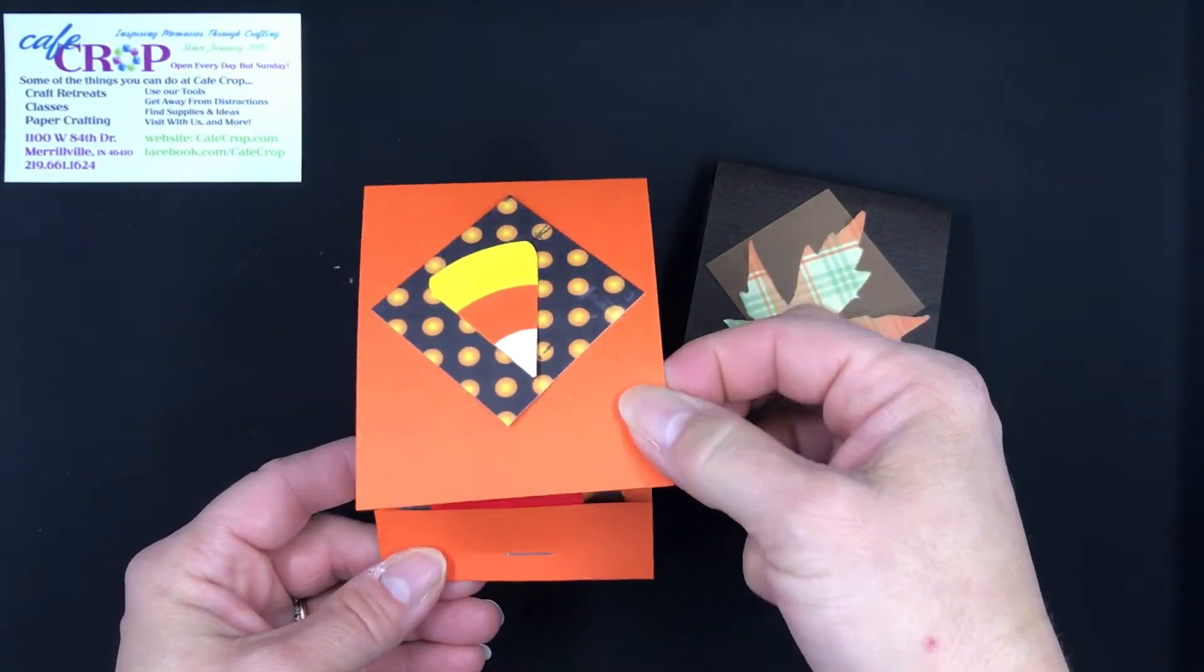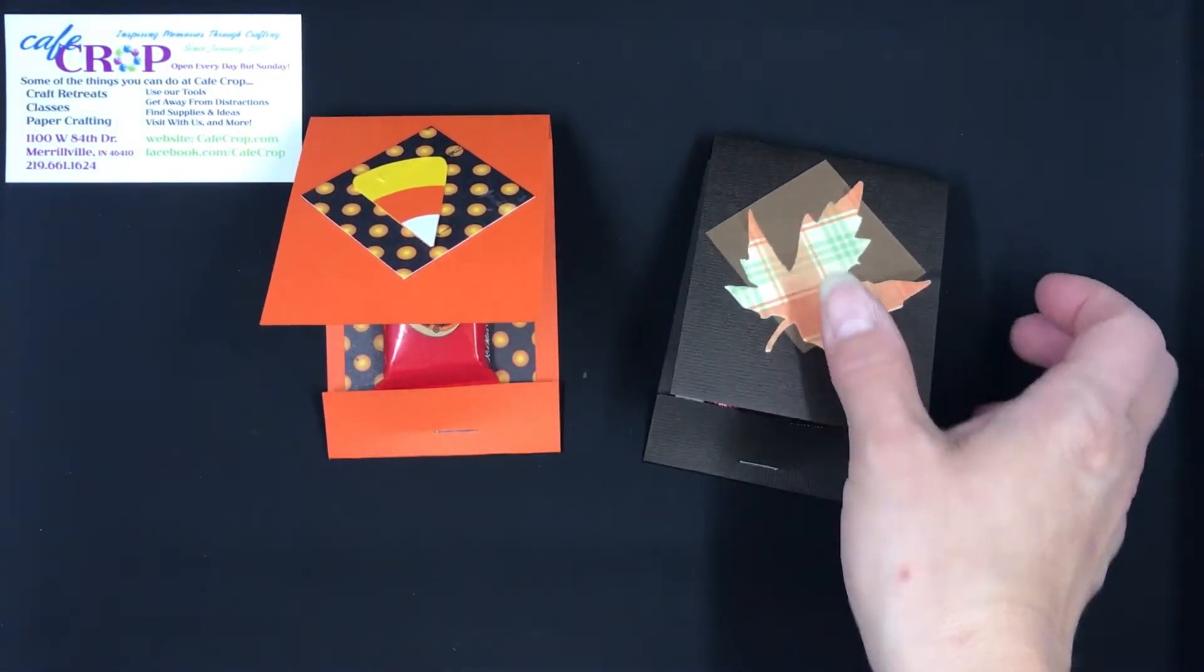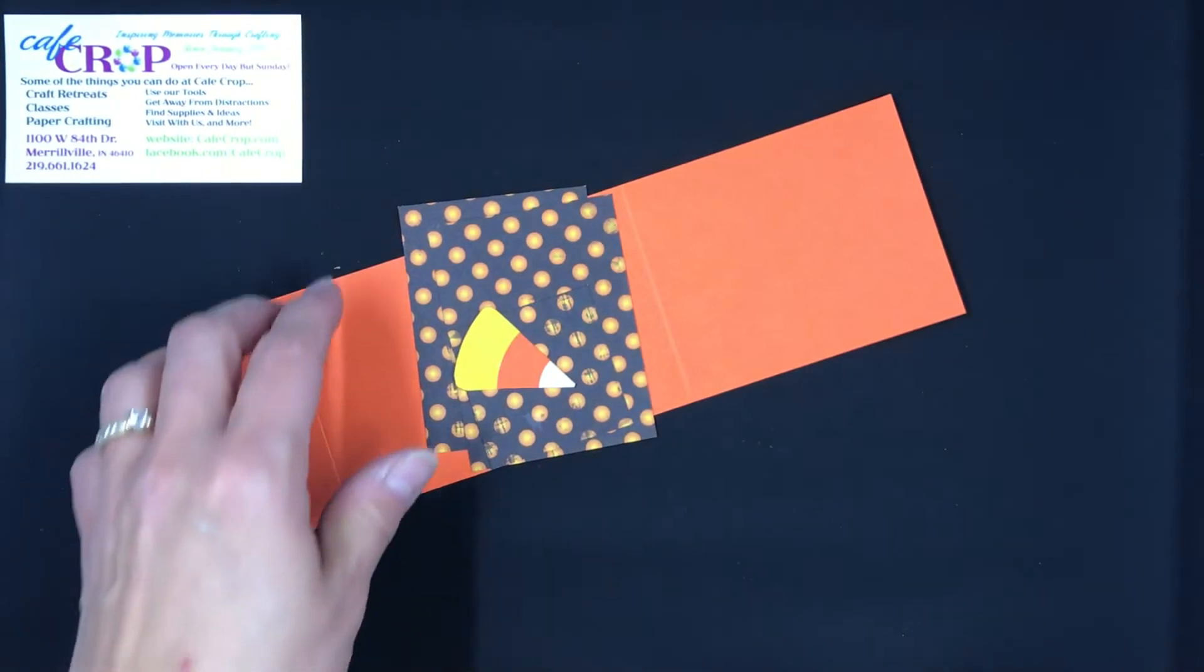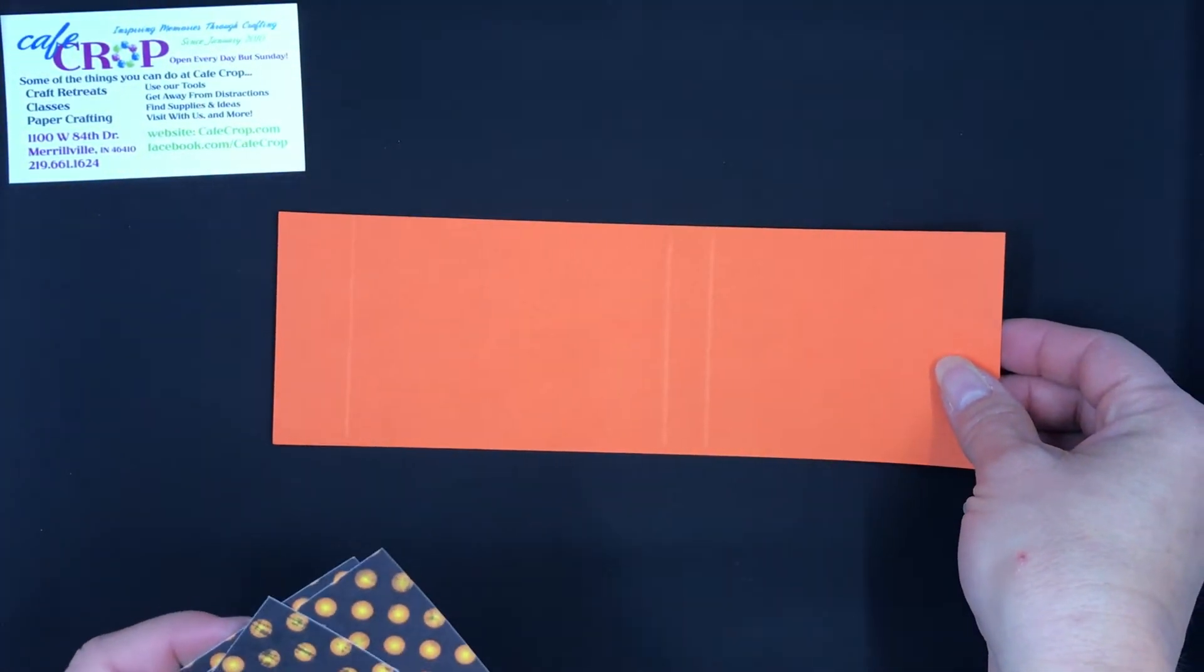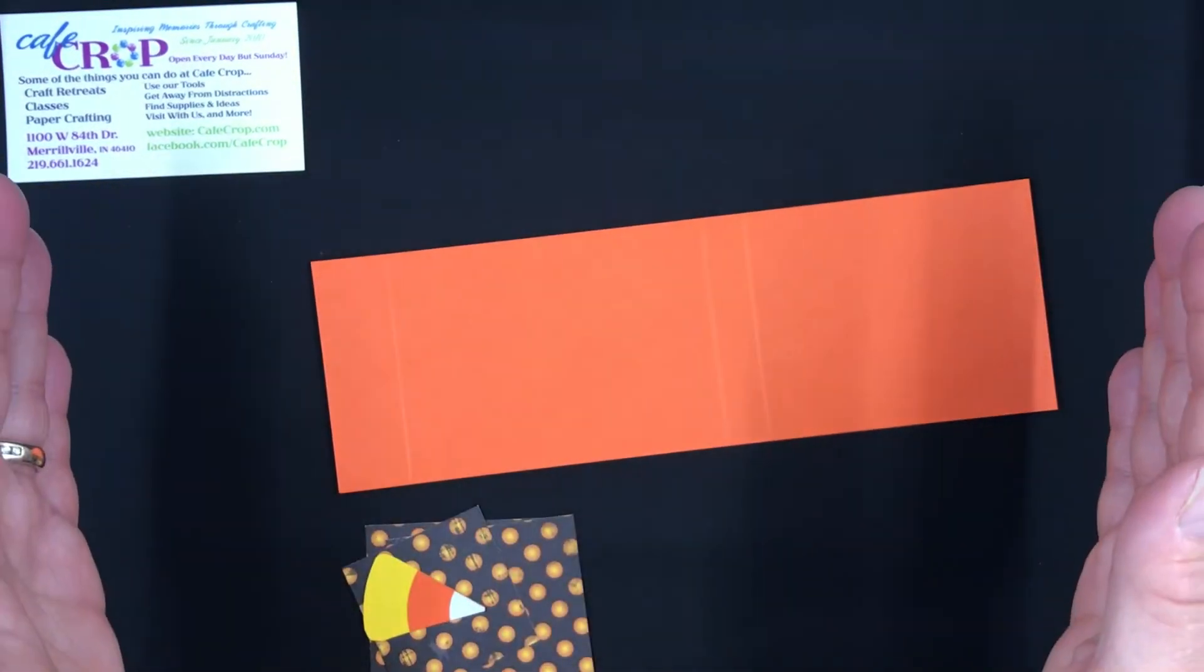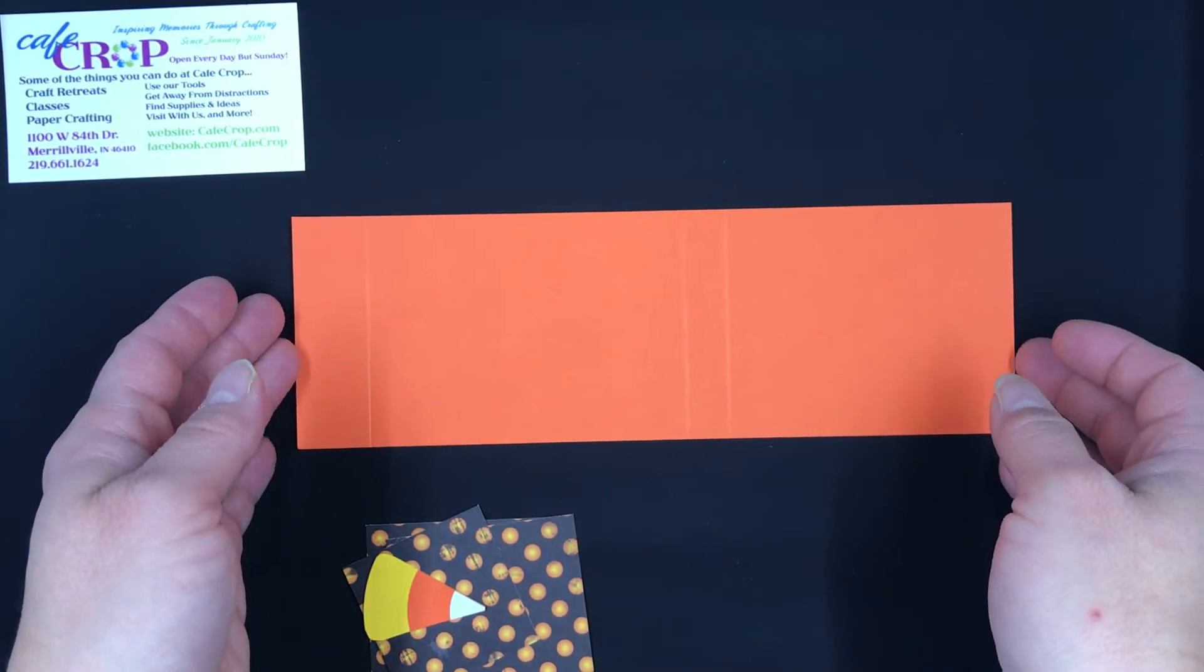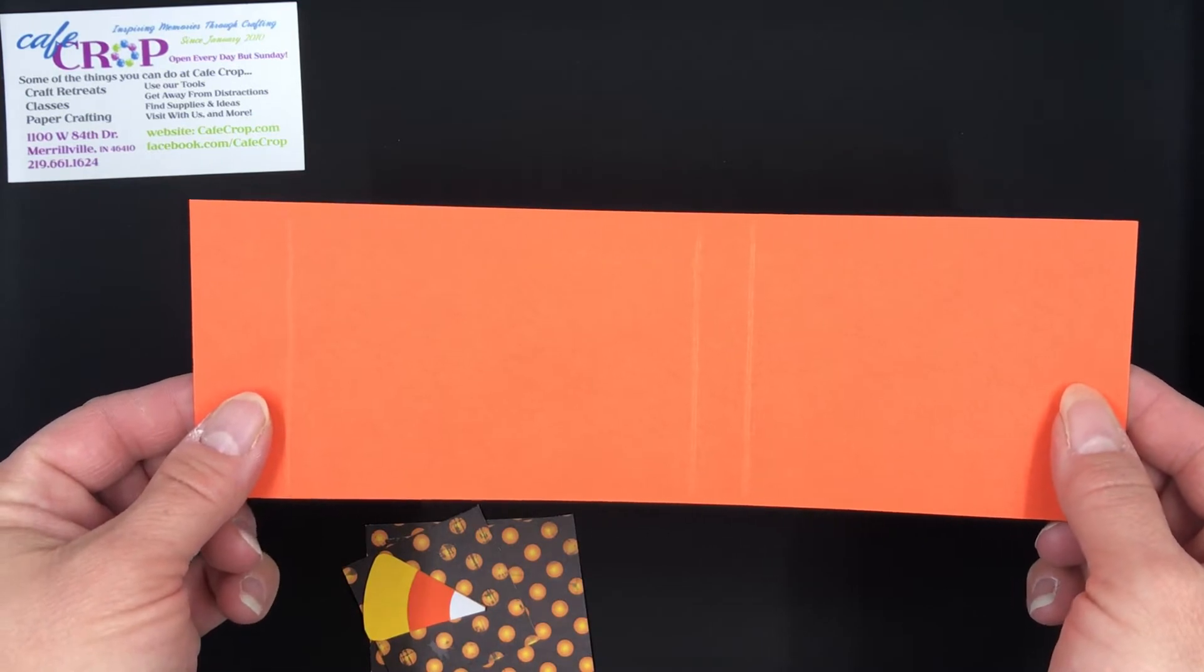Today we're actually going to make this candy corn one, so let's get started. First thing we're going to start out with is our pieces that we need for the project. I'm starting with one quarter of an 8.5 by 11 inch piece of paper. So if you take your full 8.5 by 11 and cut it in half, just like you were going to make an A2 card, and then cut that in half lengthwise, you end up with one long skinny piece.